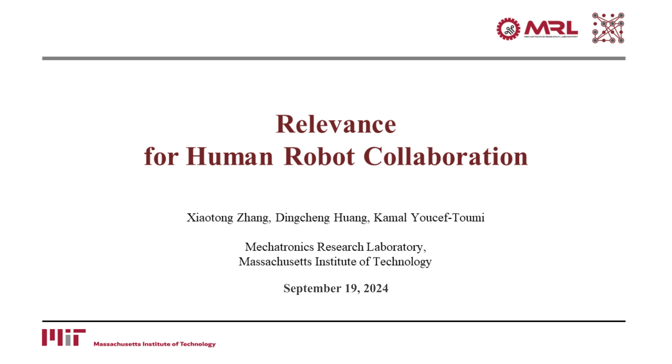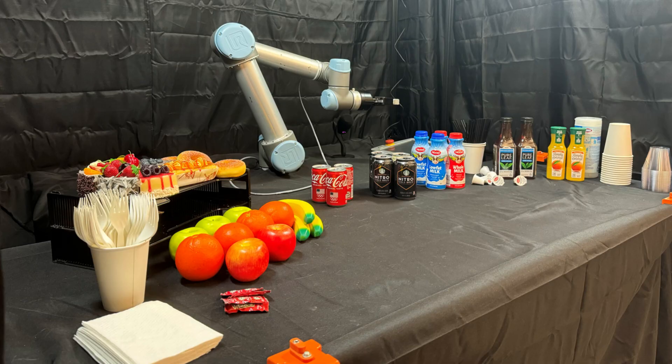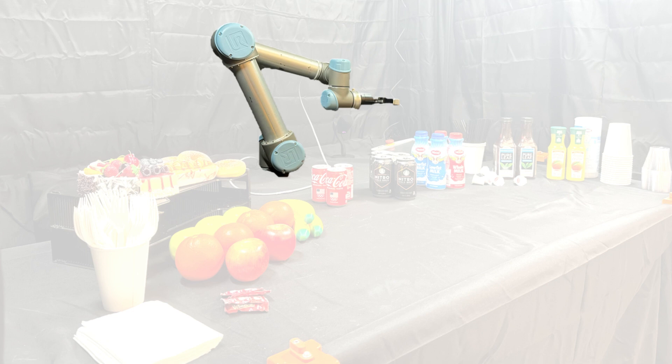This video is the demonstration video for the paper: Relevance for Human-Robot Collaboration. This is the demonstration setup. On one end of the table, a UR5 robot arm with a robotic gripper is mounted to reason about the relevance and generate actions to assist humans.